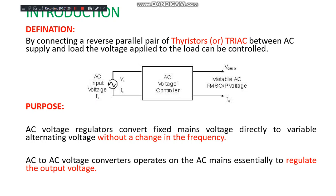The purpose of AC to AC converters: AC voltage regulators convert fixed mains voltage directly to variable alternating voltage without change in frequency. The main purpose of this voltage controller is to convert fixed voltage to variable voltage. Here the input is fixed and the output is variable AC voltage, without any change in frequency. AC to AC voltage converters operate on the AC mains essentially to regulate the output voltage.